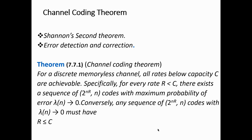For the theorem, consider a discrete memoryless source as well as a discrete memoryless channel. The discrete memoryless source generates M number of messages at a rate R, and we have a discrete memoryless channel with a capacity C.